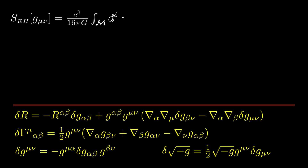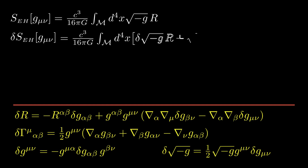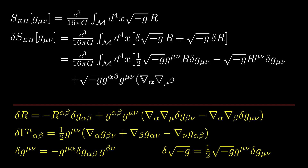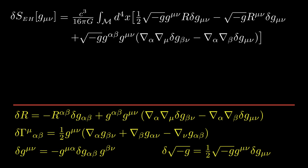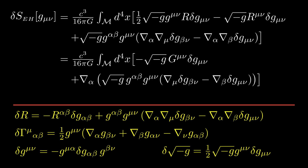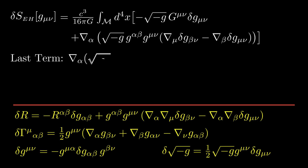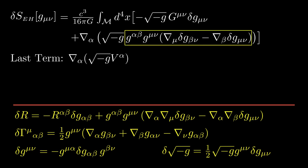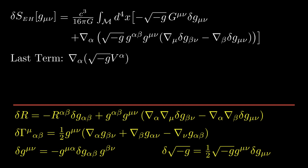Now we are ready to vary the Einstein-Hilbert action. There are two terms: one comes from varying the square root of minus G, the other from varying the scalar curvature. Using the results below, we have the following expression for the variation of the action. The first two terms in the integrand combine to form the Einstein tensor, while the remaining terms form a total covariant derivative. The total covariant derivative has the form del alpha acting on the square root of minus G times V alpha, where V alpha is the contravariant vector formed from the highlighted terms. Since the covariant derivative of the metric vanishes, the covariant derivative acting on the square root of minus G vanishes as well, and we can write the last term as the square root of minus G times the covariant derivative of V.